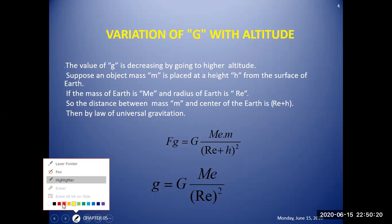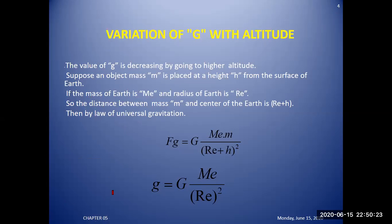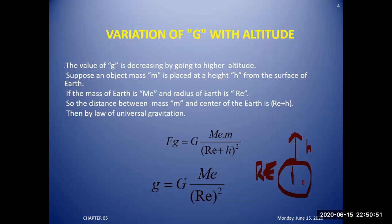If you look at the diagram, the radius of the earth is R_e. When you move above the surface of the earth to a height h, the total distance of the body from the center of the earth is R_e plus h.